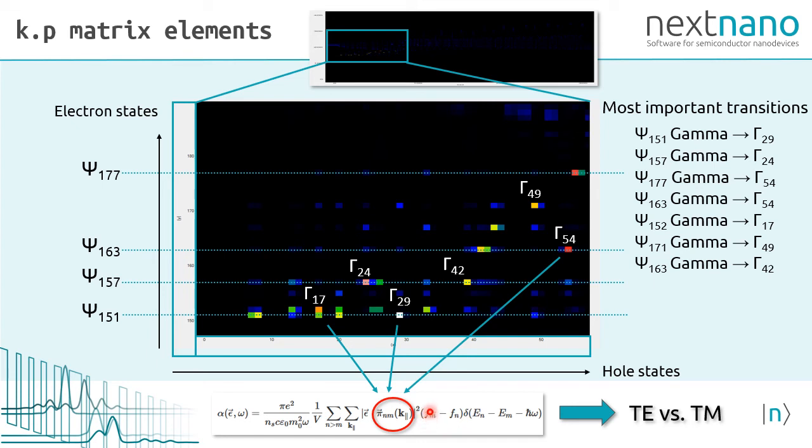Each transition can be resolved into their spin components, so we can tell which transition is heavy-hole dominated and which transition is crystal-field split-off-hole dominated.